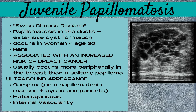Juvenile papillomatosis is also known as Swiss cheese disease. This is papillomatosis in the ducts plus extensive cyst formation. It occurs in women less than age 30, it is rare, and it is also associated with an increased risk of breast cancer. It usually occurs more peripherally in the breast, compared to a solitary papilloma, which is most commonly found in the subareolar region.